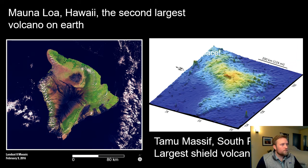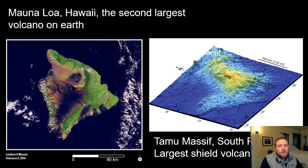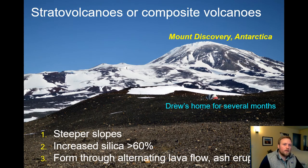Mauna Loa is a massive volcano out in the middle of the Pacific Ocean. From the base on the ocean floor to its peak, it is actually taller than Mount Everest, but it is not the largest volcano on Earth. The largest volcano on Earth hasn't fully reached the ocean surface yet — in the South Pacific there's a giant shield volcano called the Tamu Massif. We can see just how big Tamu Massif is from its scale: it is 200 kilometers across versus Mauna Loa which is only 80 kilometers wide.